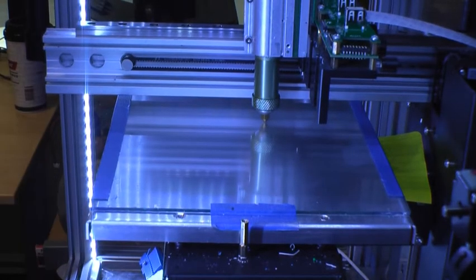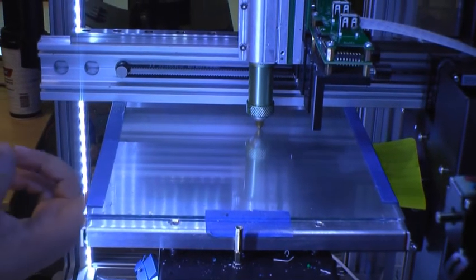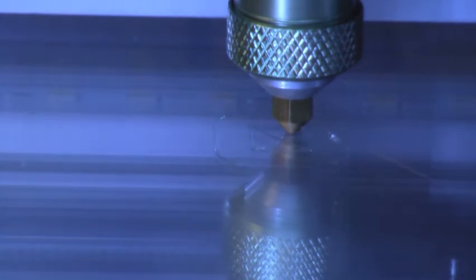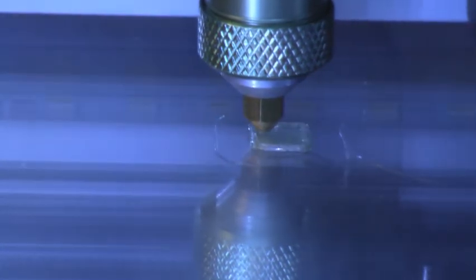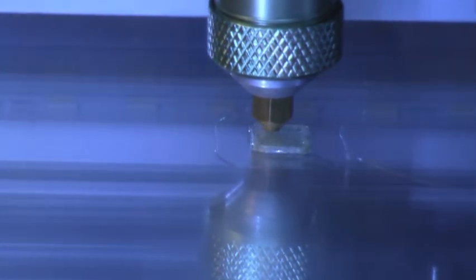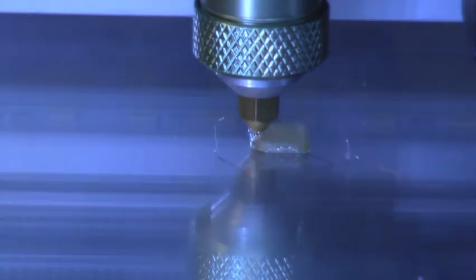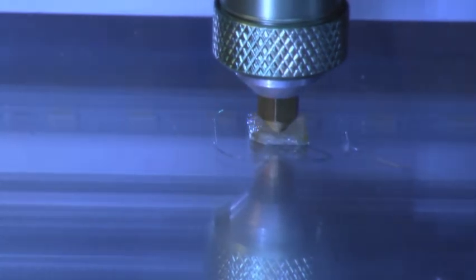Alright, now we're going to set our zero position for the head. We're going to purge a little bit of material out to make sure it's flowing right. And now we're going to start our print. This is a little pyramid. It's 10 millimeters on a side. It gets about 5 millimeters high. Here you can see it printing nicely.